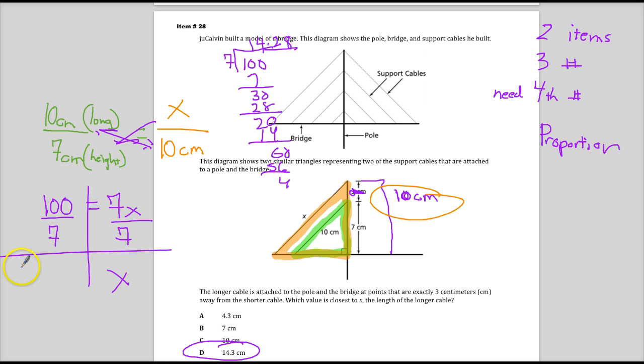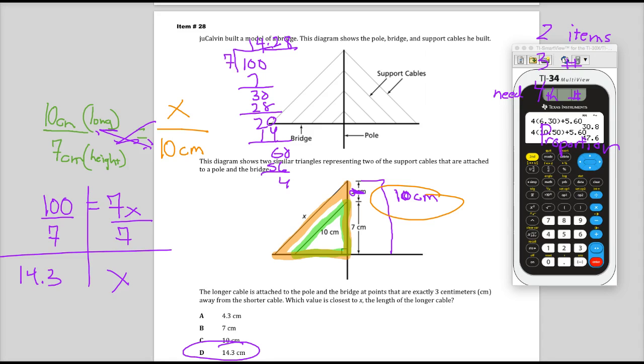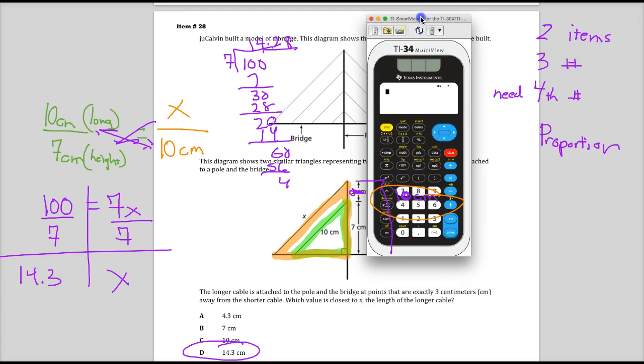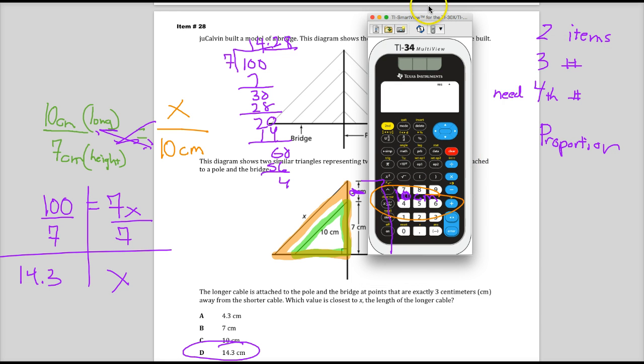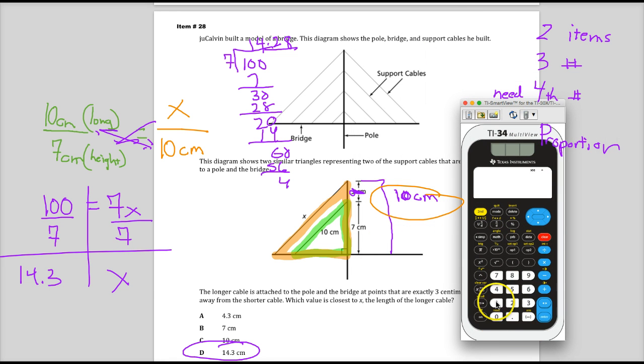So if you want to just do it in a calculator, just do it in a calculator. Why would you not? I mean, it's a basic computational question. They're not assessing that skill anyway. So 100 divided by 7, 14.28. And it would have gone on forever. See why I didn't continue it? So 14.3 is your final answer.